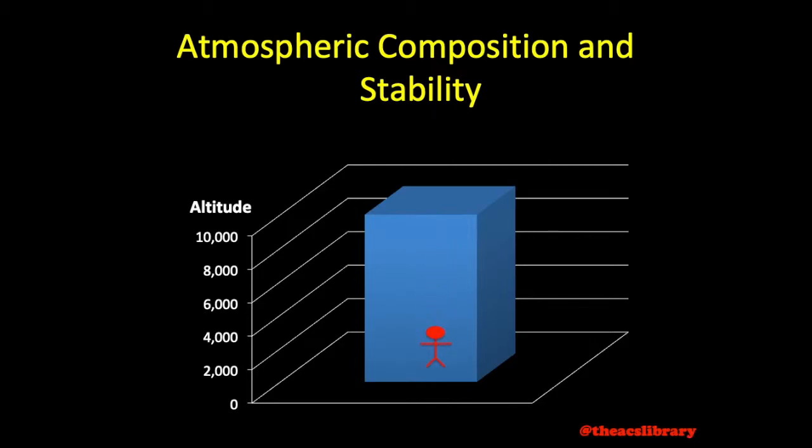The same happens with air, but obviously much less intensely. At 10,000 feet MSL, we have 10,000 feet less air weighing down on us than we would have 10,000 feet lower at sea level. Therefore, the pressure at 10,000 feet MSL is much lower than that at sea level.